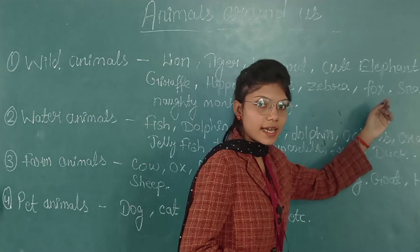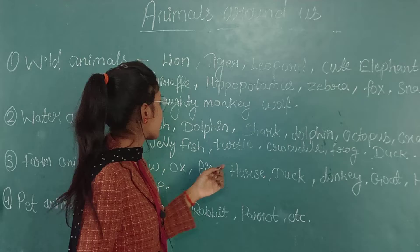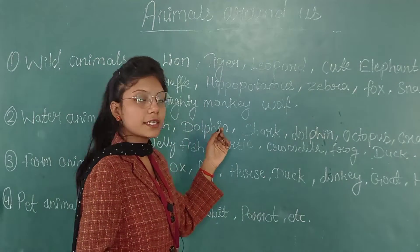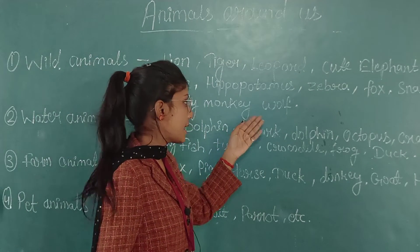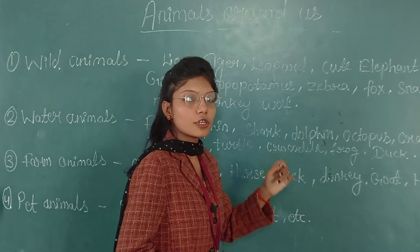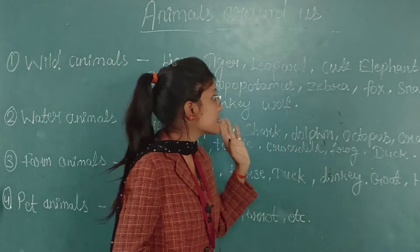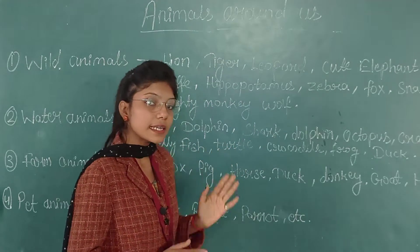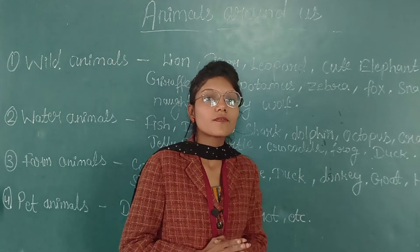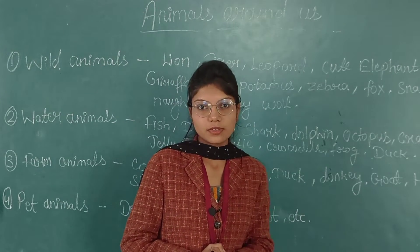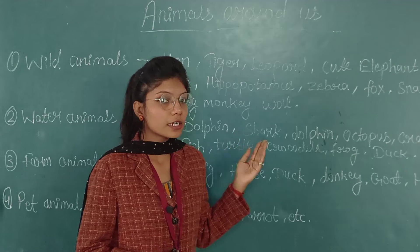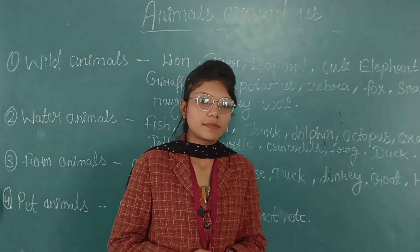Now clever fox, and the next one is snake. Naughty monkey. And wolf. These all animals live in the forest, so they are called wild animals.